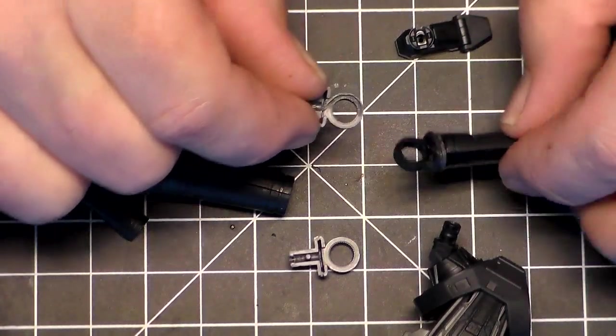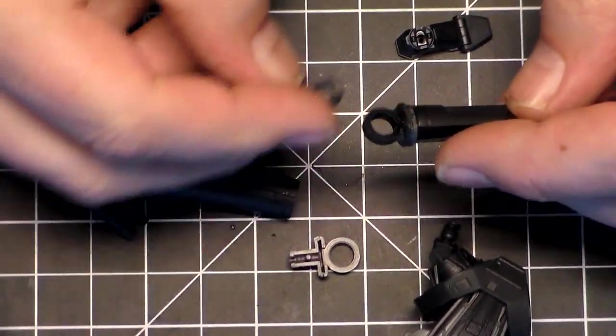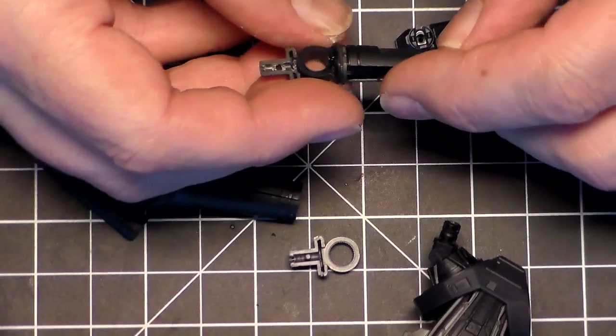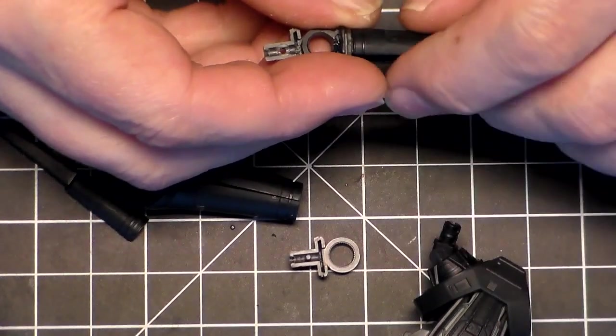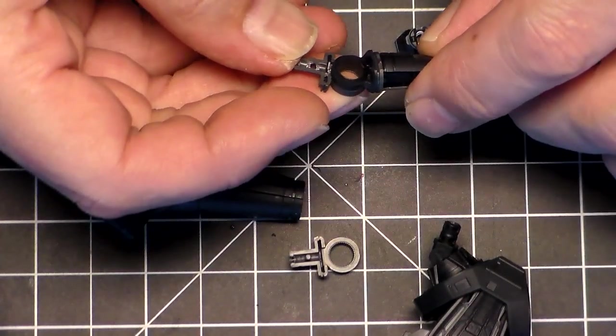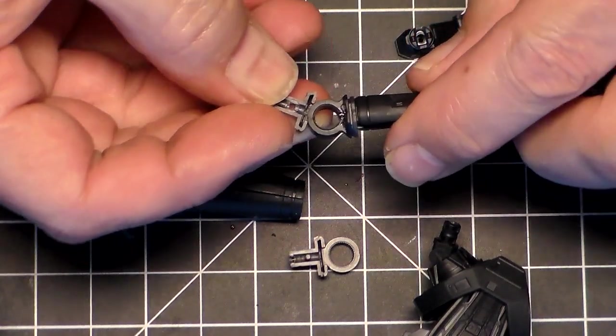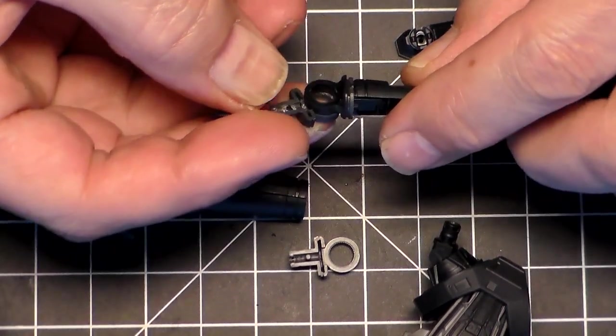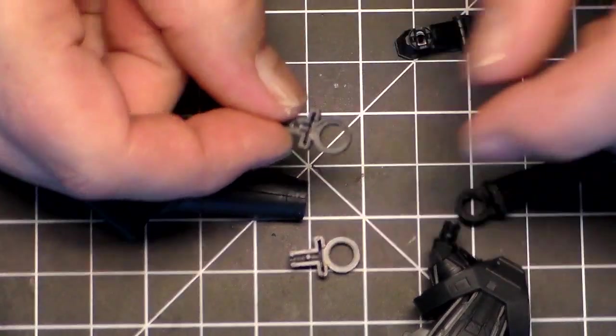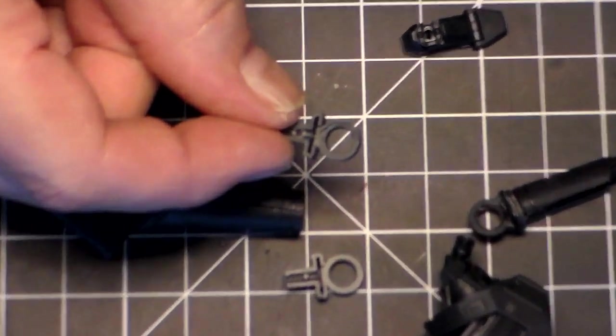Now, as far as this joint here, on the kit there's these little clear plastic pieces that go in there to hold these together. On the movie, these were open, there wasn't anything in there. So what I've done is, let me see if I can get a little closer here.